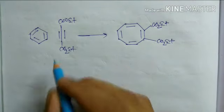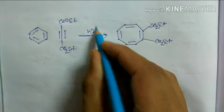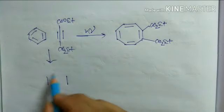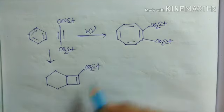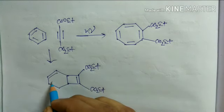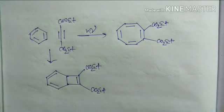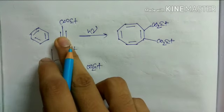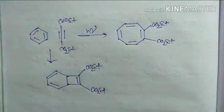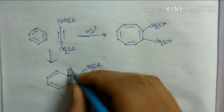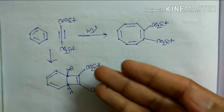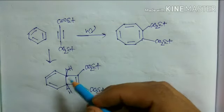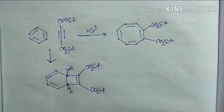The first step is the cycloaddition reaction — you can see it is a photochemical reaction, so the first step will be 2+2 cycloaddition. There is no confusion about that because 2+2 cycloaddition is favorable in photochemical conditions. In photochemical conditions, the 2+2 cycloaddition will be a suprafacial reaction — both parts will react suprafacially. So these two hydrogens will be cis, meaning they will be on the same side of the plane, either both upward or both downward. I am taking both as upward.